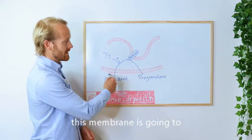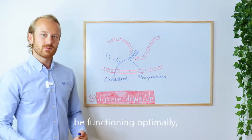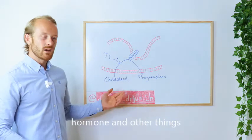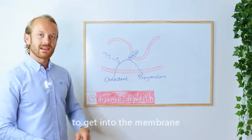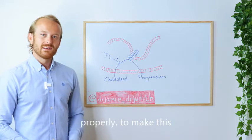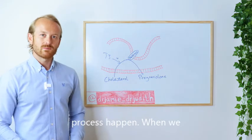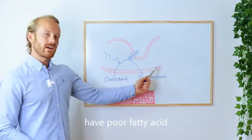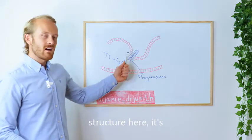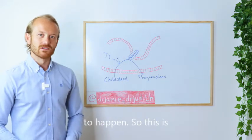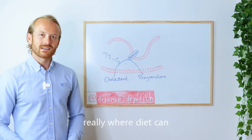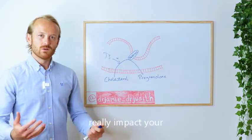This allows thyroid hormone and other things to get into the membrane properly to make this process happen. When we have poor fatty acid structure here, it's harder for this process to happen. So this is really where diet can really impact your hormones.